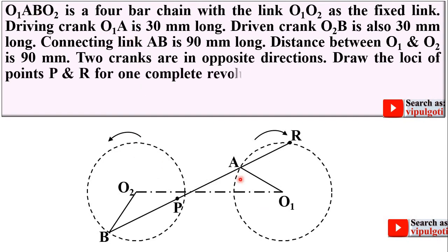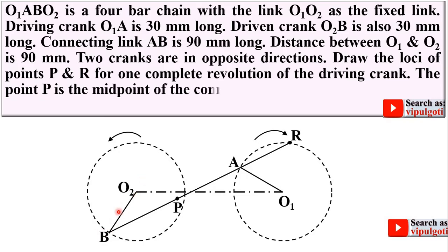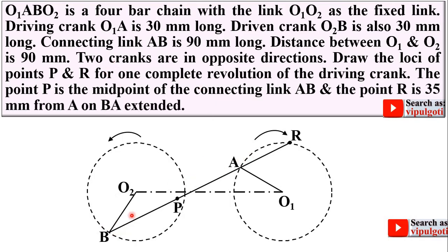Driving crank O1A is 30 mm long. Driven crank O2B is also 30 mm long. Connecting link AB is 90 mm and the distance between O1 and O2 is 90 mm.